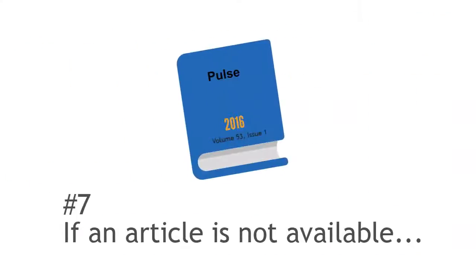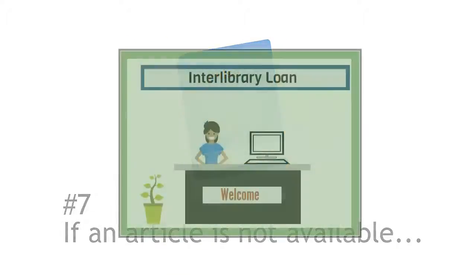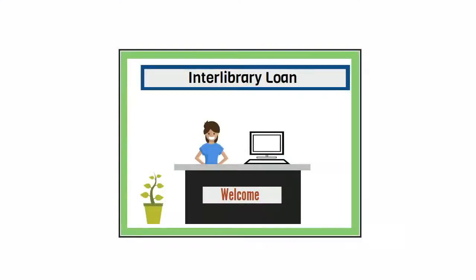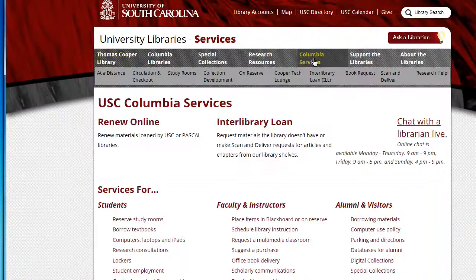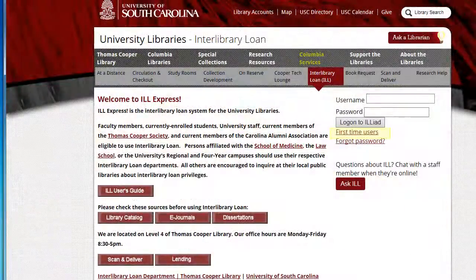Number seven: if an article is not available, try our Interlibrary Loan Service. PubMed has citations for over 5,600 journals, and we do not have subscriptions to all of them. If we don't have access to an article that you need, request it through our Interlibrary Loan Service — they will try and get you a copy. Best of all, there's no cost to you.